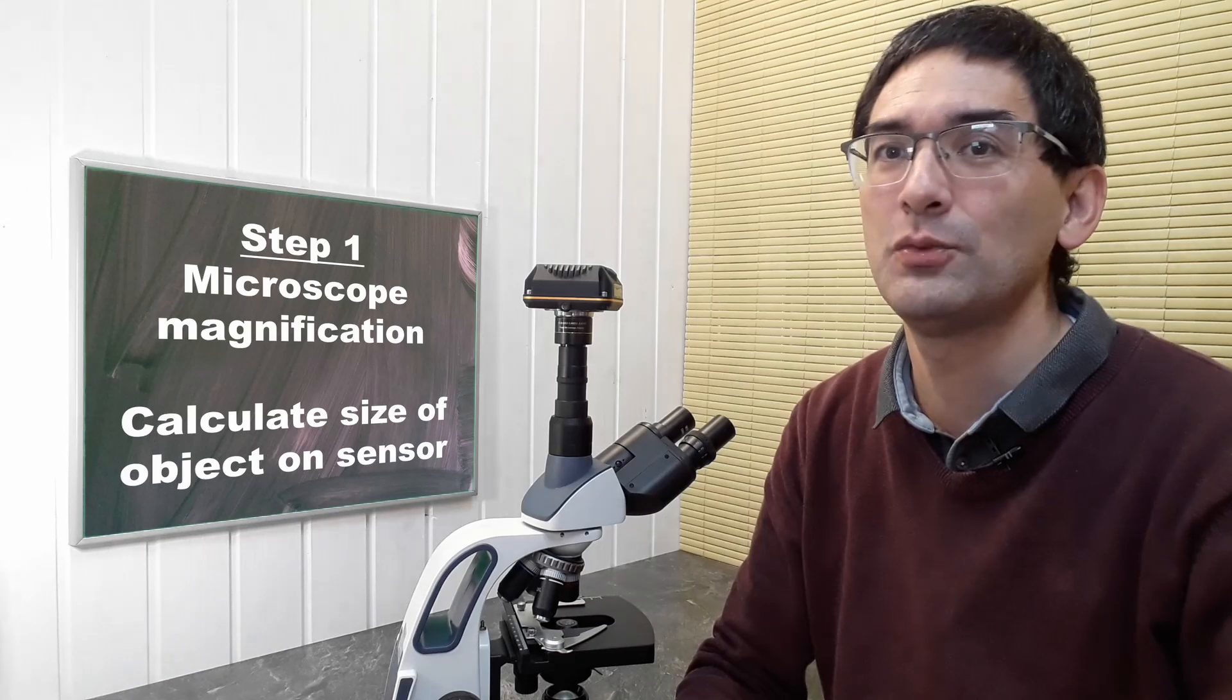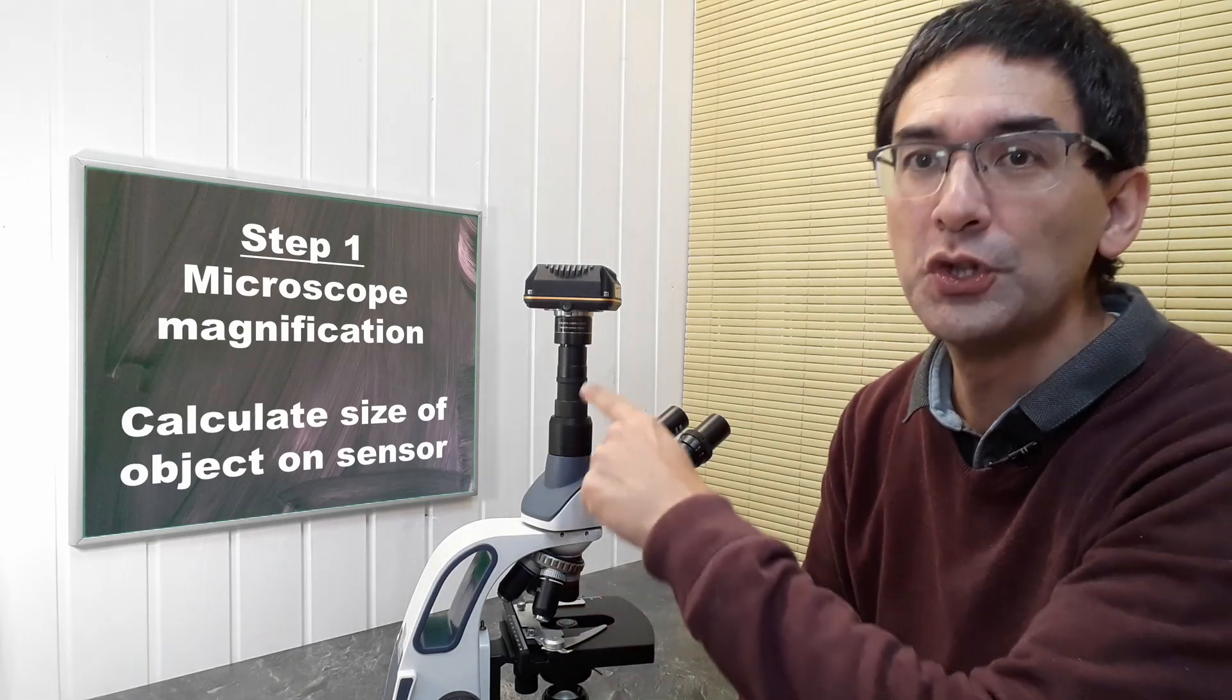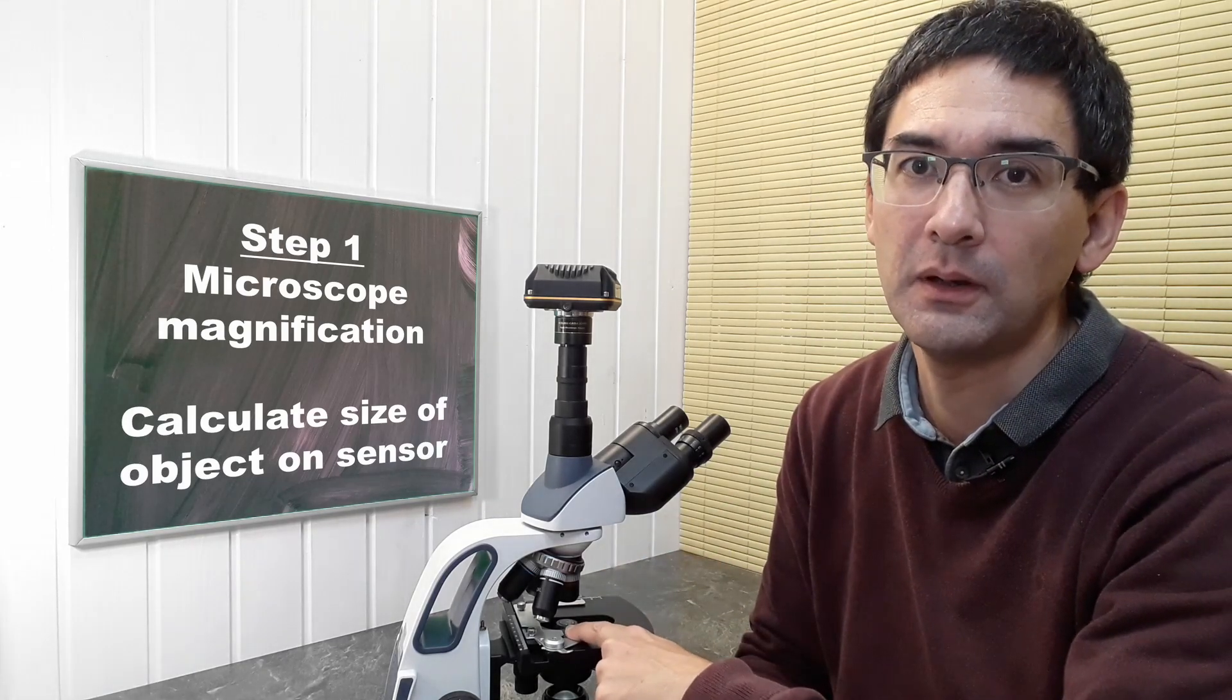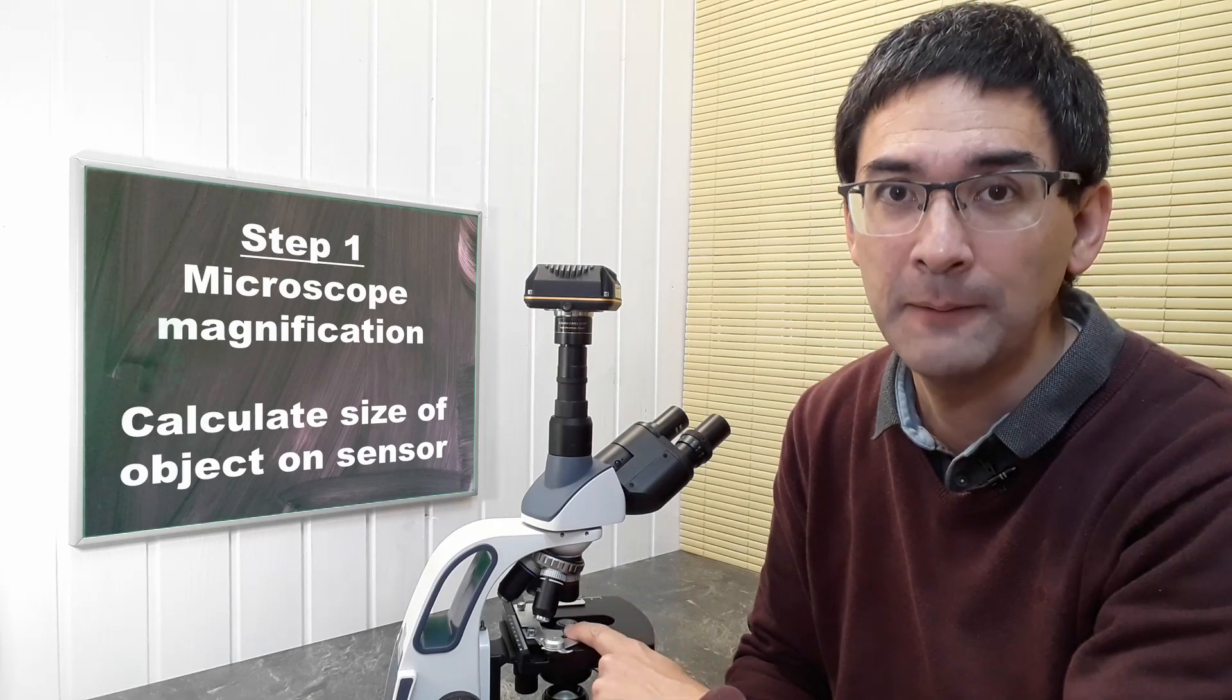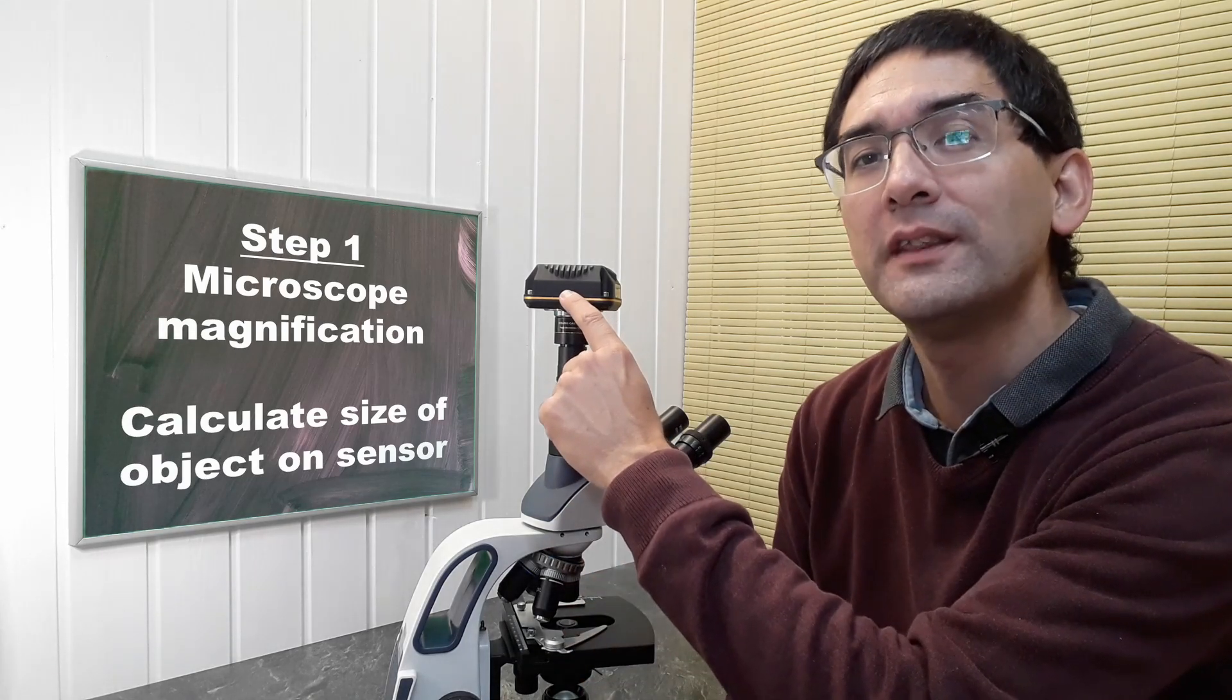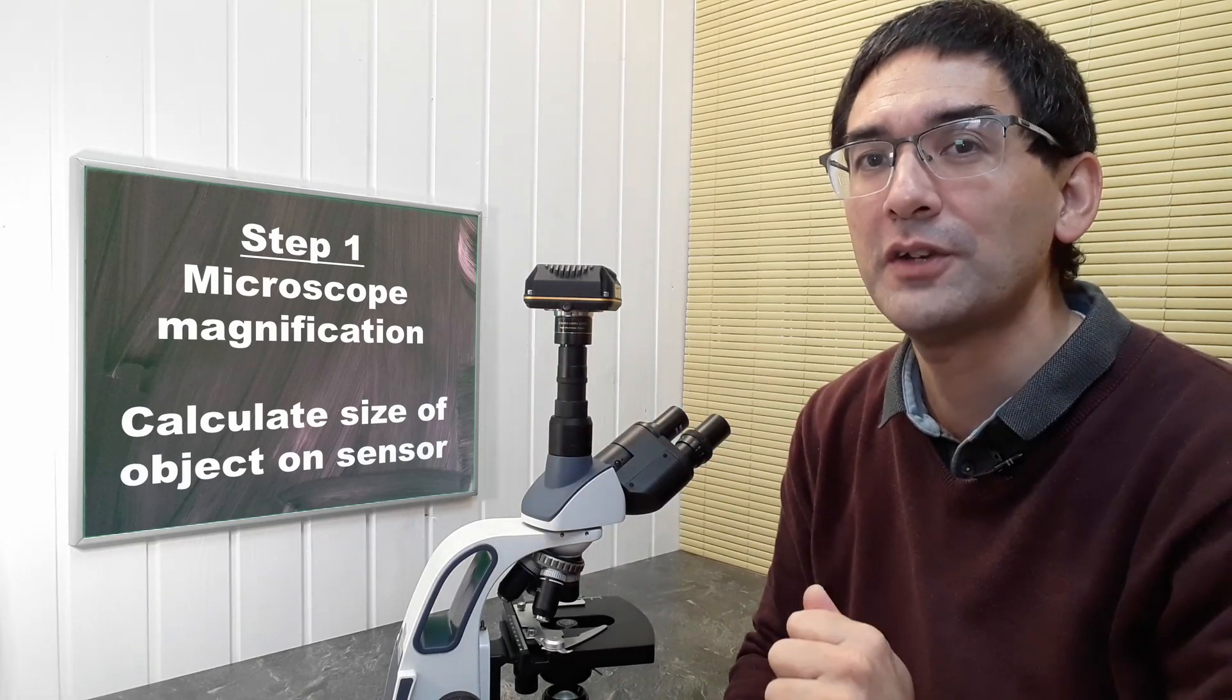Step number one: we have to figure out how much the optical system of the microscope magnifies. When I put a specimen under the microscope on my slide, how big is this specimen going to be on the sensor in the microscope camera?